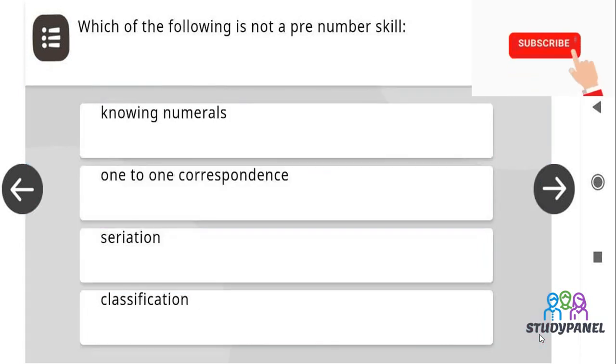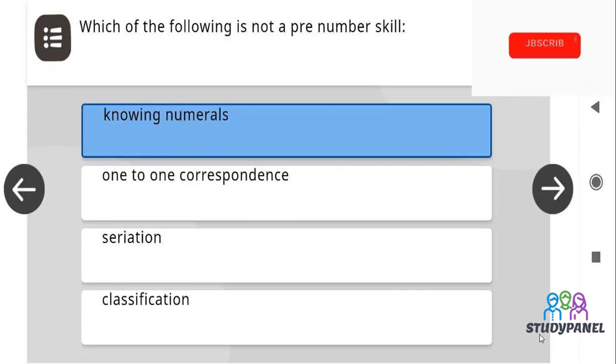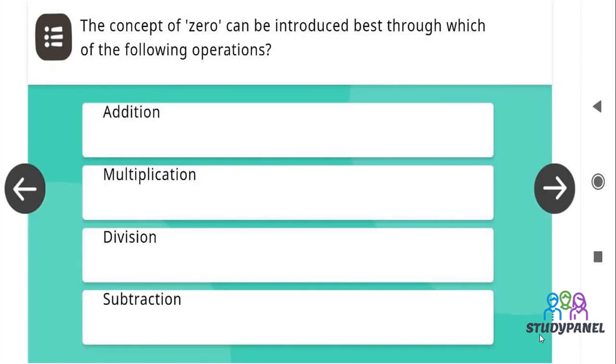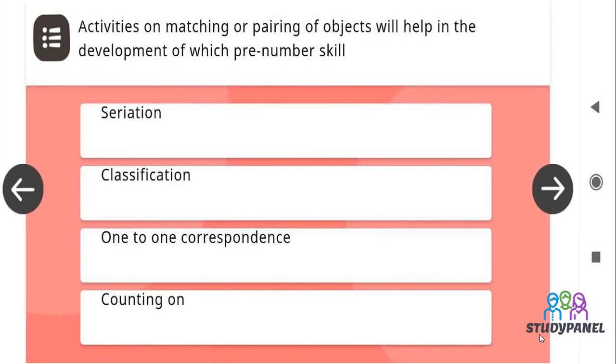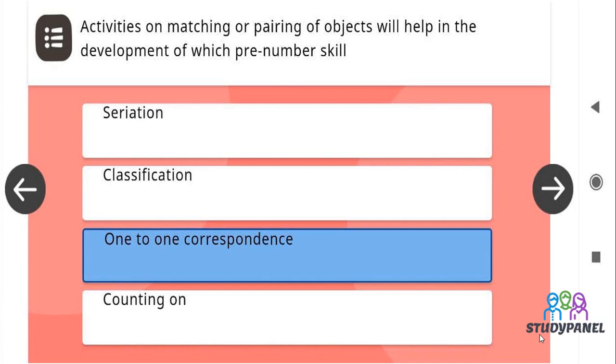Which of the following is not a pre-number skill? Knowing numerals. The concept of zero can be introduced best through which of the following operations? The correct answer is subtraction. Activities on matching or pairing of objects will help in the development of which pre-number skill? The correct answer is 1 to 1 correspondence.